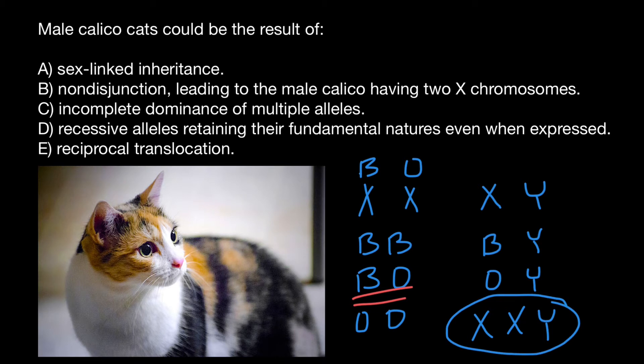And it can be whether on the father side, so this male cat can get, instead of just Y chromosome, both X and Y chromosome from the father side, or it can happen on the mother side. So from the mother side, due to non-disjunction, this male cat can get two X chromosomes and one Y chromosome from the father side.